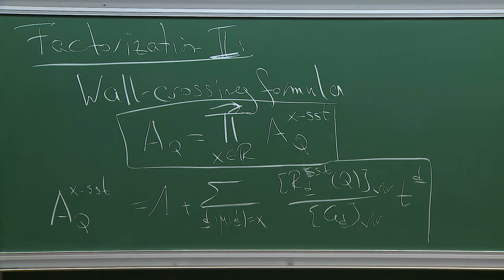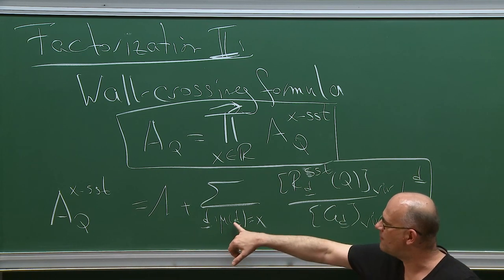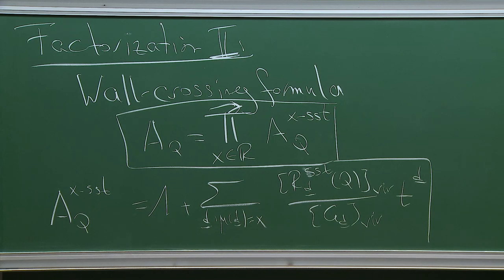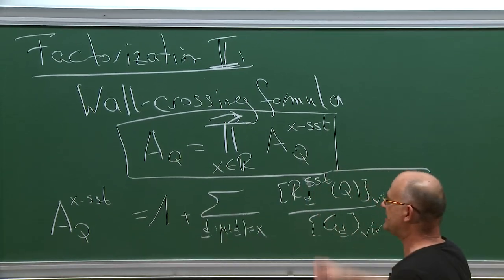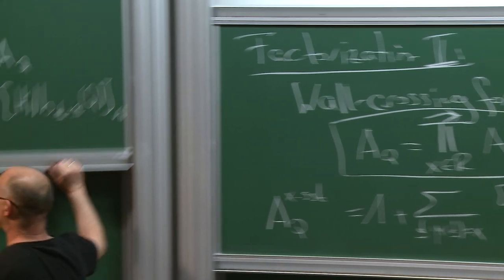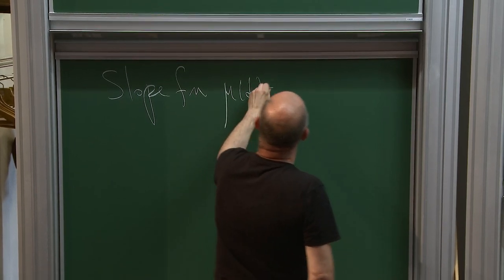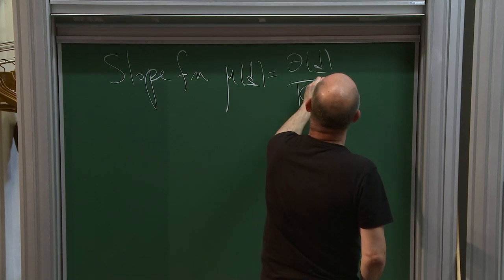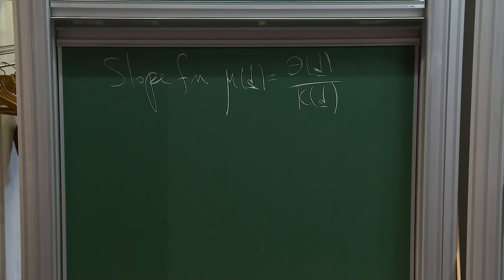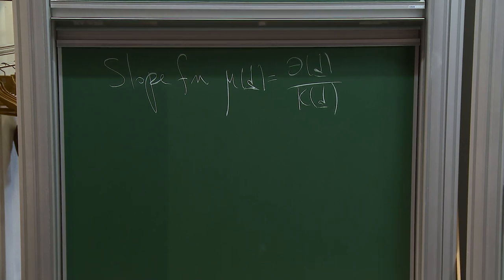In the space of all dimension vectors — which has dimension equal to the cardinality of Q_0, the number of vertices — you have a codimension-one subspace, because the slope of d being a fixed real x is just one linear condition. Everything here depends on the choice of a stability function or slope function mu(d) defined as theta(d) divided by kappa(d), where theta and kappa are real-valued linear functions on the space of all dimension vectors.